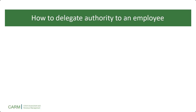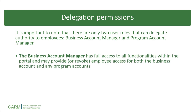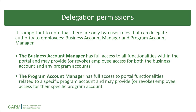Now, let's review the process for delegating authority to an employee. It is important to note that there are only two user roles that can delegate authority to employees – Business Account Manager and Program Account Manager. The Business Account Manager has full access to all functionalities within the portal and may provide or revoke employee access for both the business account and any program accounts. Program Account Managers have full access to portal functionalities related to a specific program account and may provide or revoke employee access for their specific program account only.